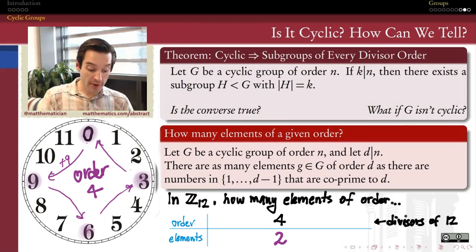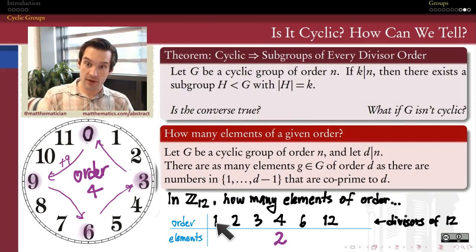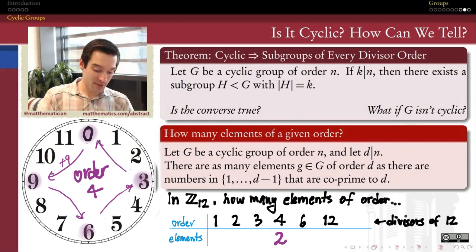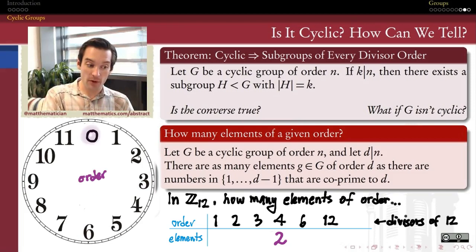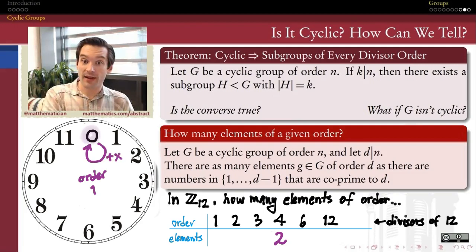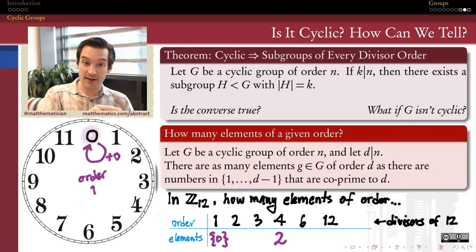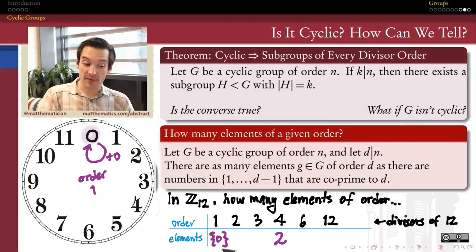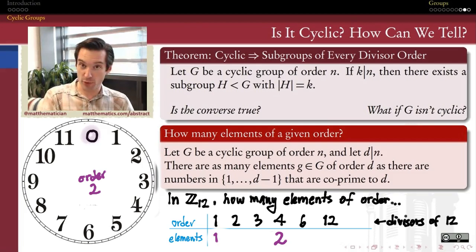This same process works for all the other divisors of 12. How many elements of order 1 are there? This is kind of trivial — there is only ever a single element of order 1 in any group. To be order 1, an element must be the identity element. The only way to make a one-step trip back to the identity from the identity is to add the identity in the first place. Since the identity in any group is unique, there's only one element of order 1. So this is a special case.